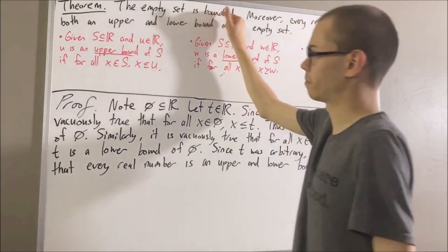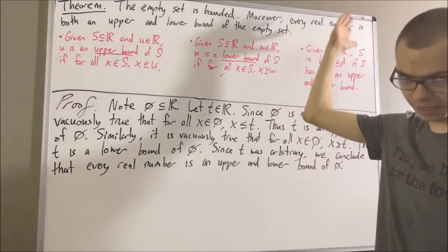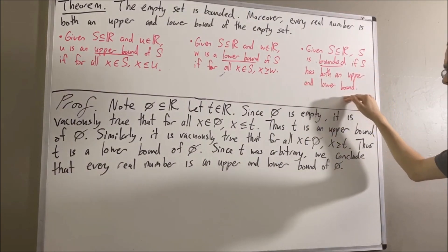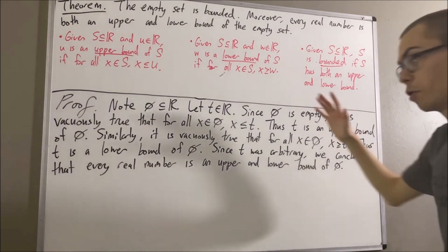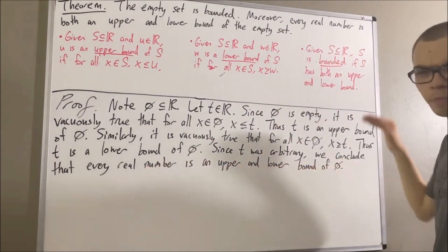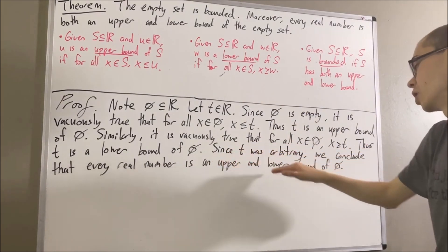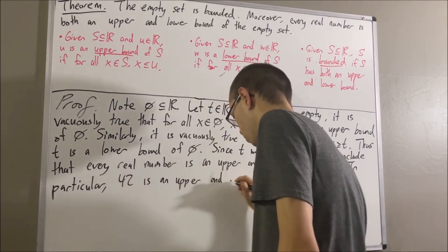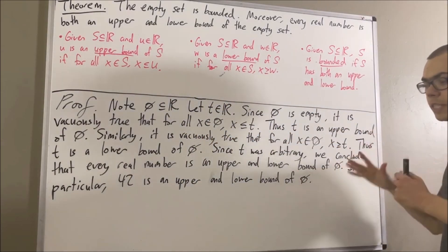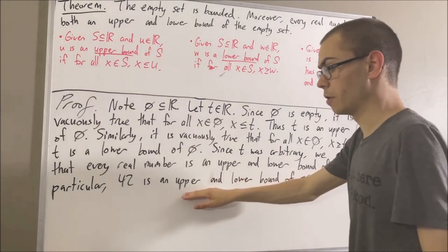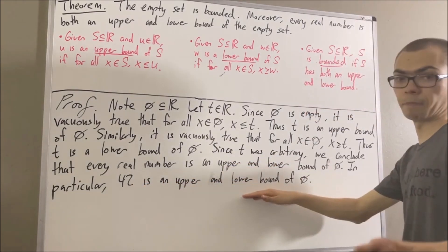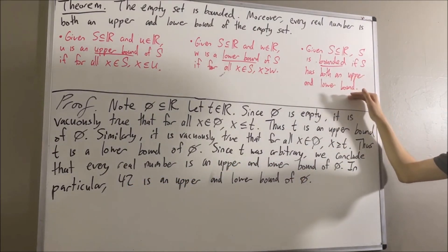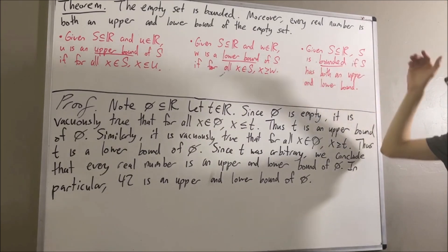Now we want to show that the empty set is bounded. What does it mean for the empty set to be bounded? It means that the empty set has both an upper and lower bound. Well, we have already shown that every real number is both an upper and lower bound of the empty set, so in particular, 42 is both an upper and lower bound of the empty set. So we see that the empty set has an upper bound, namely 42, and the empty set has a lower bound, namely 42. So the empty set has at least one upper bound and one lower bound, and that's precisely what it means for the empty set to be bounded, so the empty set is bounded.